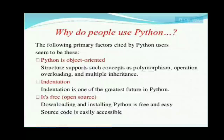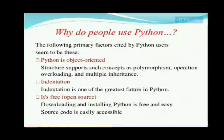Overloading means a single method can act differently in different scenarios — similar to polymorphism. Multiple inheritance is like human inheritance: just as a child inherits properties from a parent, in programming if you create one class with certain methods and create a second class, you can use the methods of the first class in the second class through inheritance.